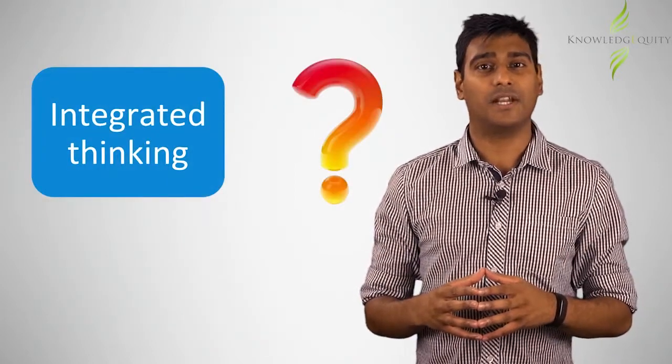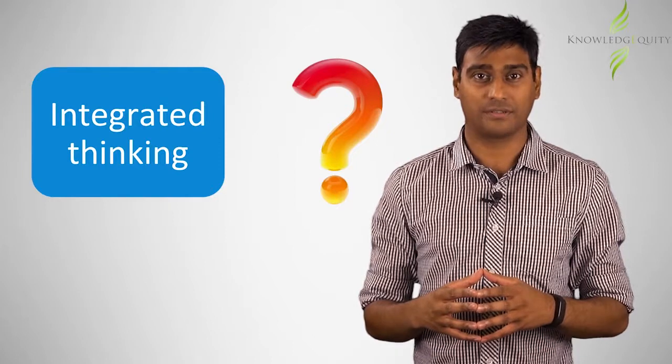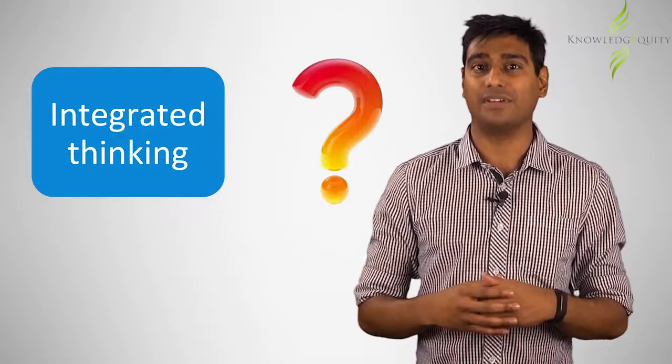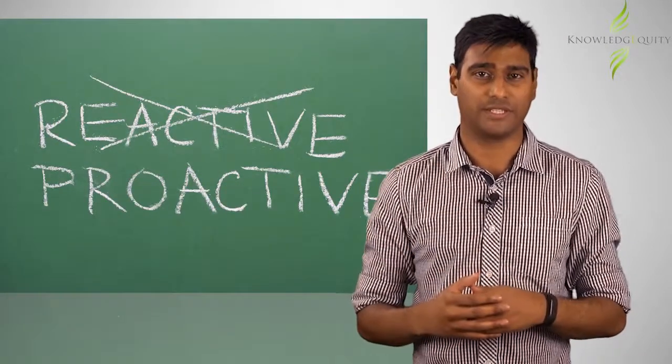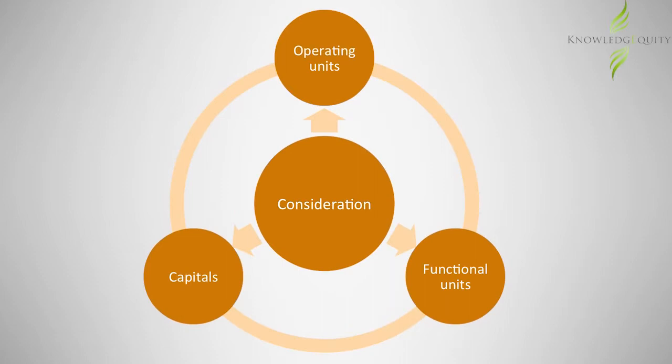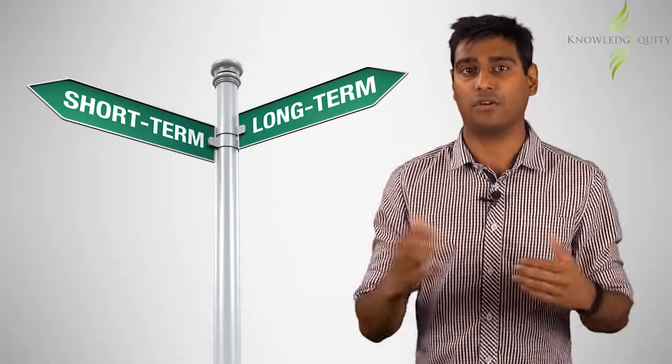Integrated thinking can be summarized by four points. One, it involves active consideration—a proactive process, not passive or reactive. Two, the consideration relates to linkages between operating units, functional units, and capitals of an entity. Three, integrated thinking results in actions and decisions that create value. Finally, the time period for value creation relates to the short-term, medium-term, and long-term.